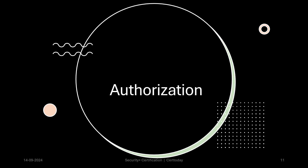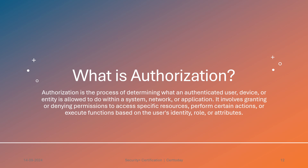The second concept of the AAA is authorization. Authorization is the process of determining what an authenticated user, device, or entity is allowed to do within a system, network, or application. It involves granting or denying permissions to access specific resources, perform certain actions, or execute functions based on the user's identity, role, or attributes.